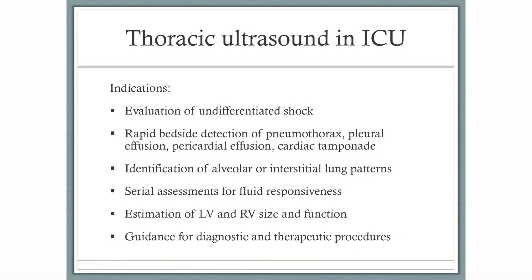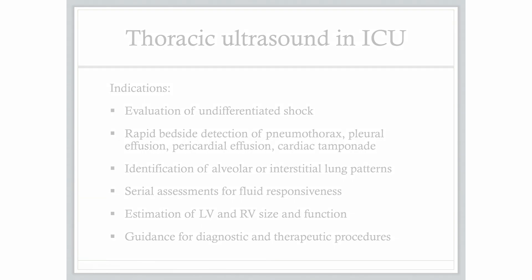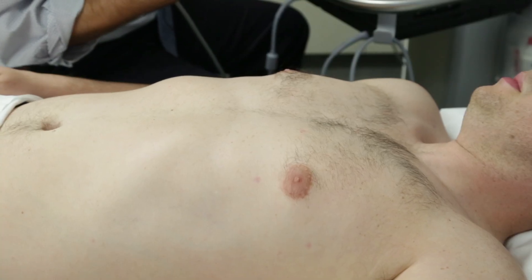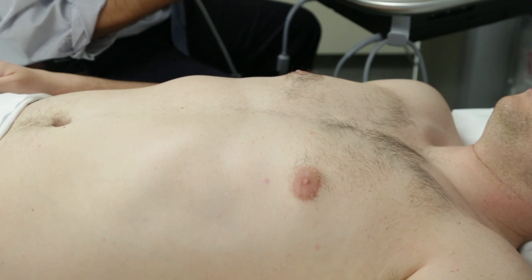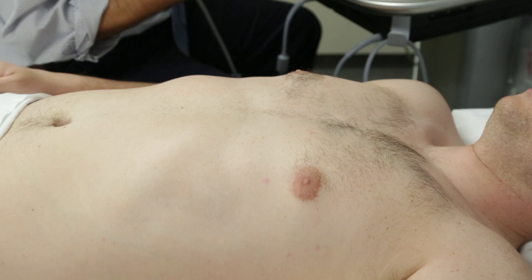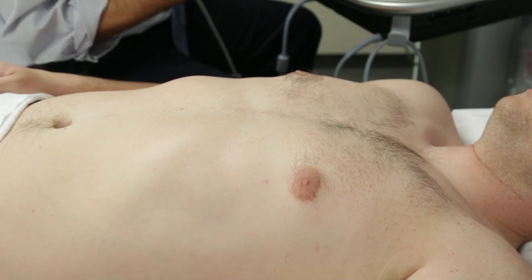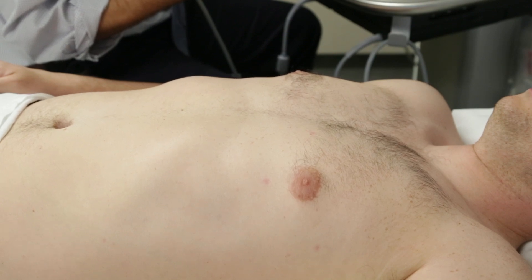Here are several indications for the utility of thoracic ultrasound in the ICU. This is by no means an exhaustive list of the clinical uses of thoracic ultrasonography. We will focus on several of these today. We will start the thoracic ultrasound exam with focused echocardiography. Image acquisition typically will begin in the parasternal window with parasternal long axis view first. For the entirety of the focused echo exam, the screen indicator will be positioned in the upper right portion of the screen, indicating scanning in the cardiac mode.